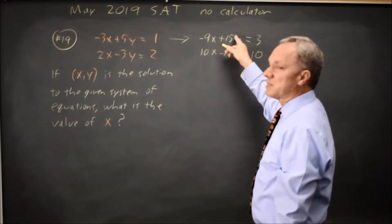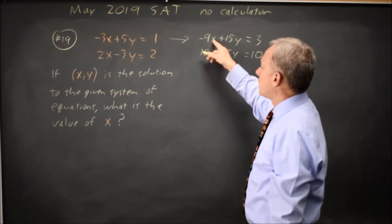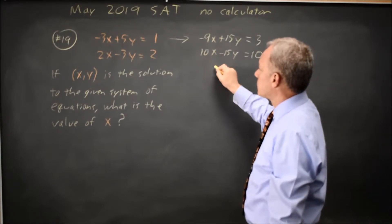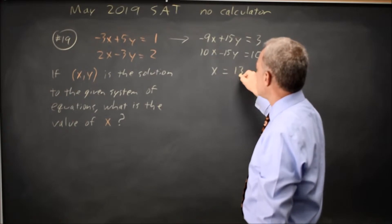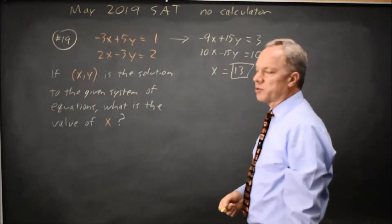If I add these two equations, that will eliminate the y. And negative 9x plus 10x is 1x, plus 0y equals 3 plus 10 is 13. So our answer would be 13.